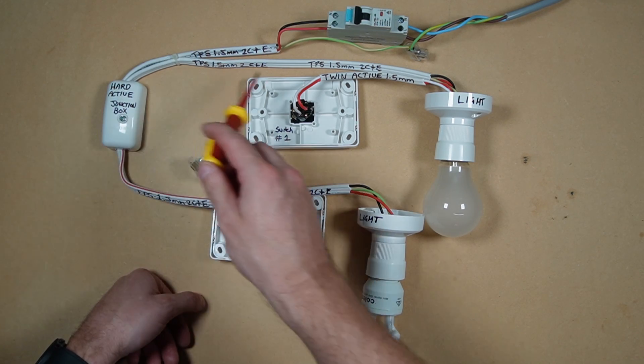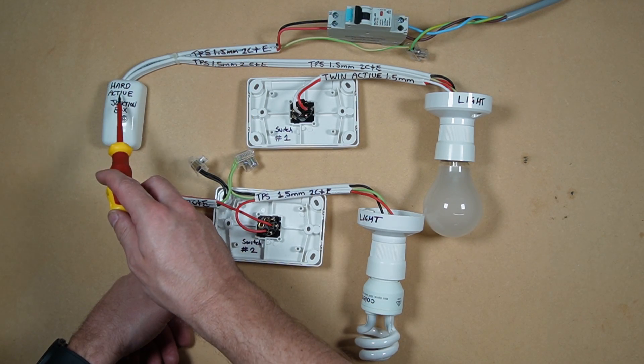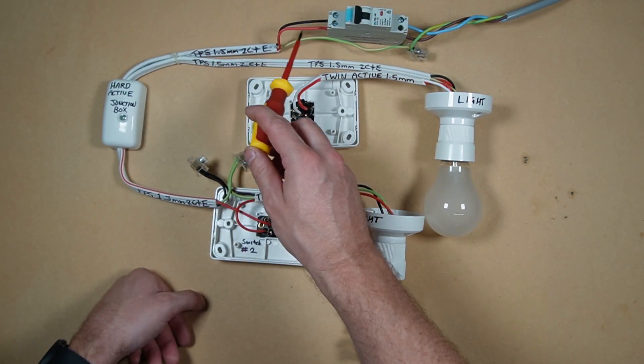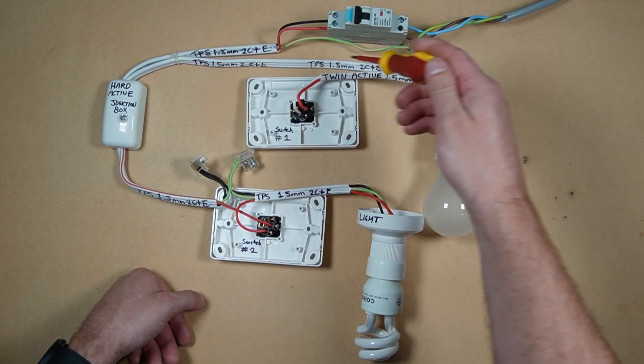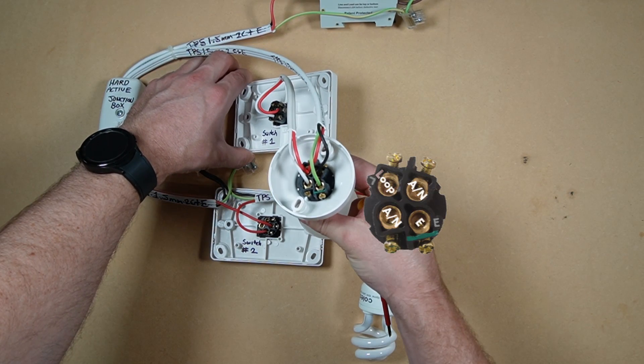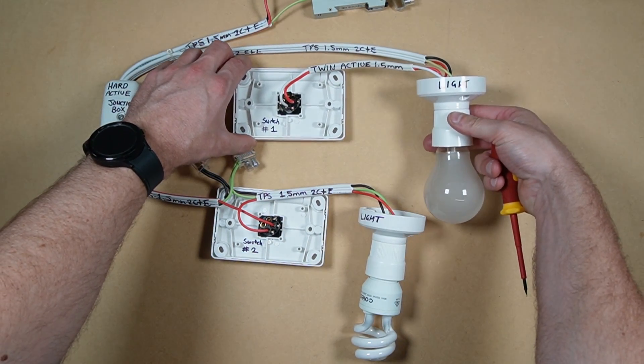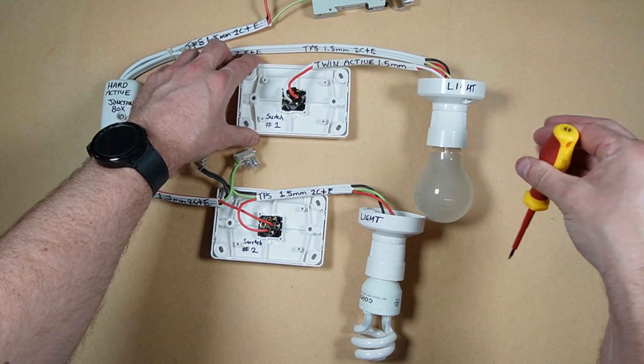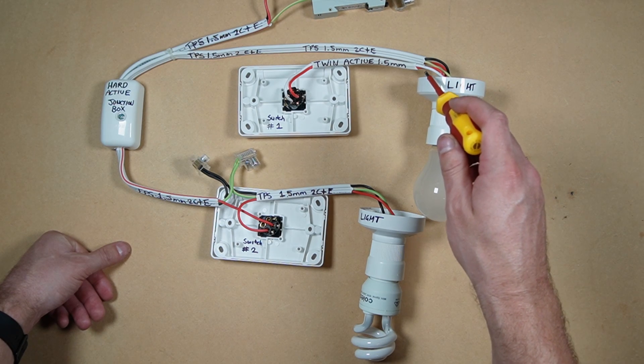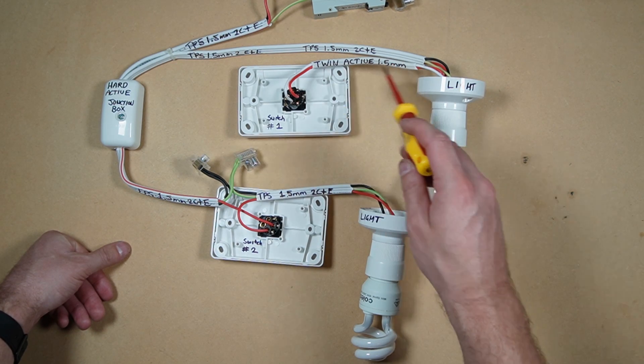Let's just run through the looping at the light first. The hard active comes out and joins, comes back out to the light and runs into the looping terminal. Then out of the looping terminal, it is joined with the red of the twin active down to our common.